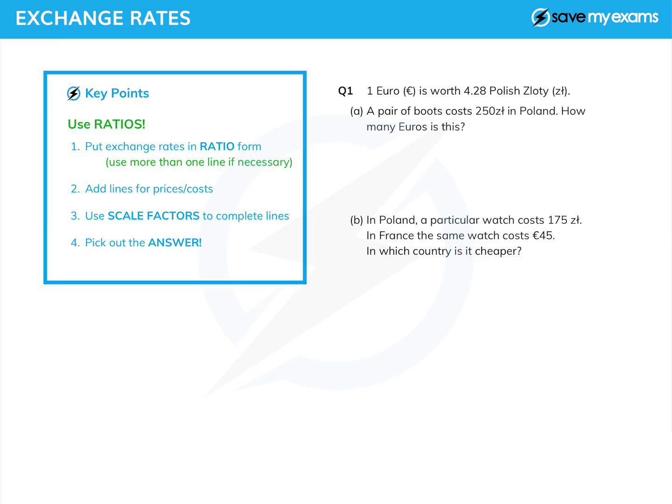We need to know what we're going for, so it's a good idea to pick out the answer early. Let's have a couple of questions. So we've got an exchange rate: one euro is worth 4.28 Polish zloty, and we are told that a pair of boots costs 250 zloty in Poland. And we're asked how many euros is this.